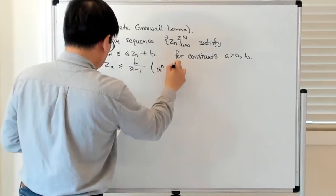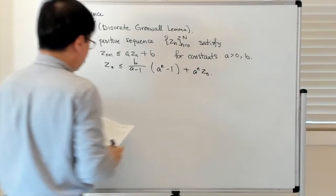Then the following is true: Z_n is less than or equal to B/(A-1) times (A^N - 1) plus A^N Z_0.